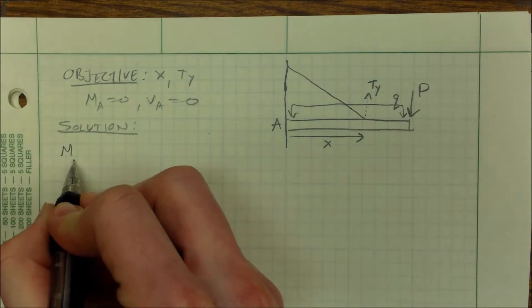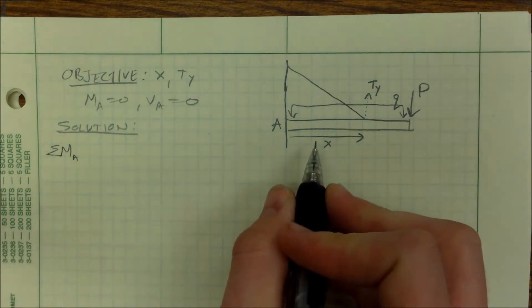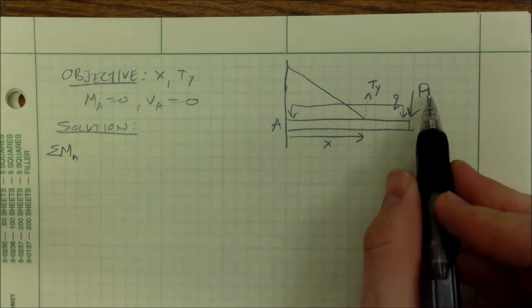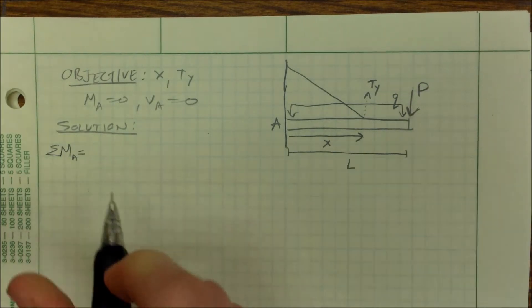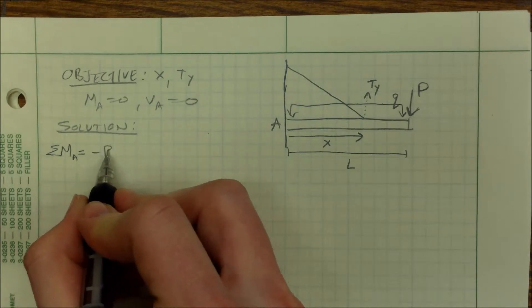Okay, sum of the moments at A, we have our load P at the very end. That's a negative moment, P times L.